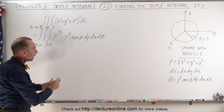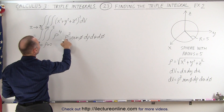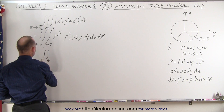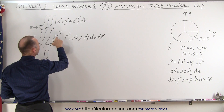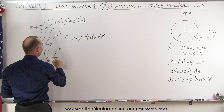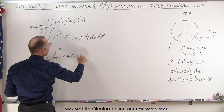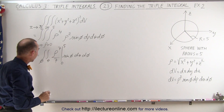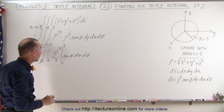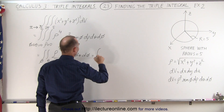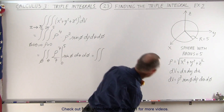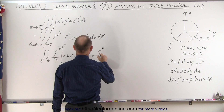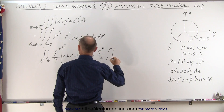Those are fairly standard since we have a spherical shape. This becomes equal to rho to the sixth. When we integrate that with d rho, this becomes the double integral over theta and phi. Rho squared times rho to the fourth is rho to the sixth. Integrated, this becomes rho to the seventh over seven times the sine of phi, d theta d phi. Rho is integrated from 0 to 5. Plugging in the lower limit gives nothing, but the upper limit gives 5 to the seventh power. Since it's a constant, we write it outside the integral: 5 to the seventh power divided by 7.